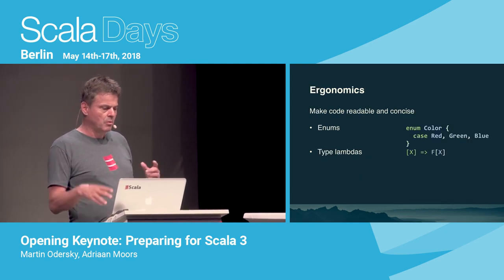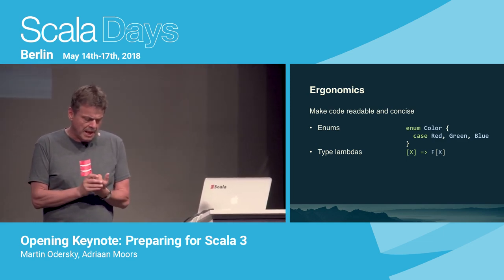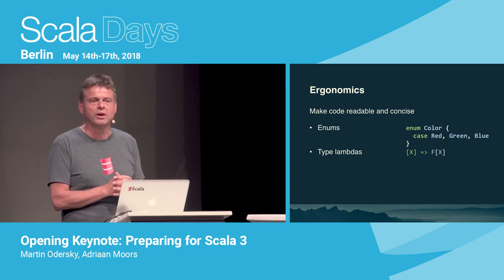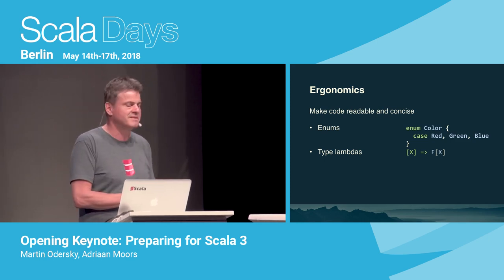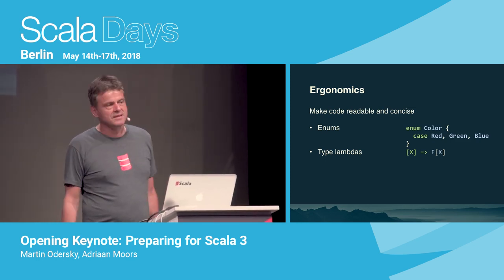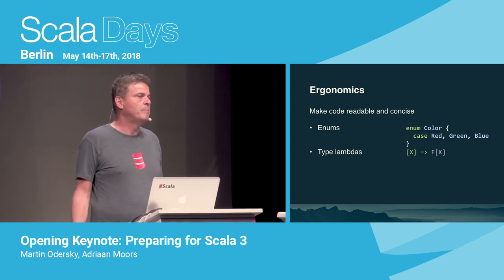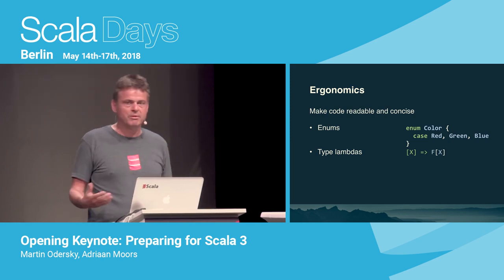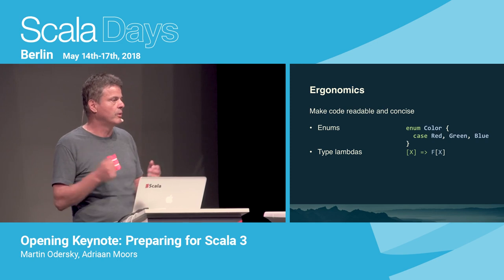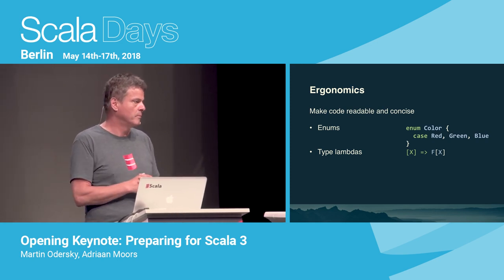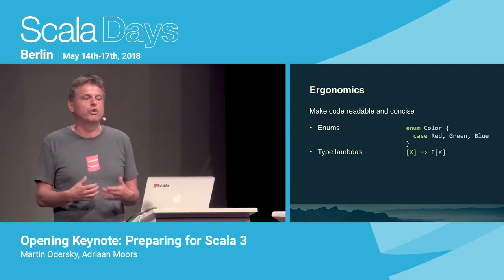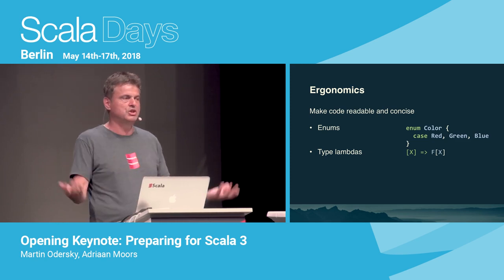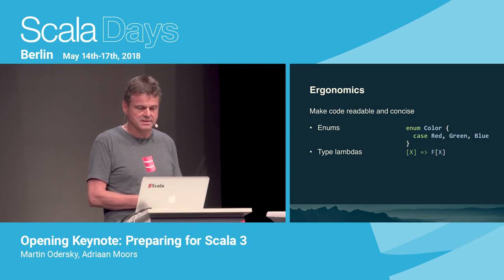For ergonomics — reducing boilerplate — Scala came and reduced boilerplate from Java programs with case classes, no getters, no setters, no equality methods. But over the years, we've developed patterns in Scala programs that are actually quite boilerplate-y themselves. We use case classes for data types left and right, everywhere — it's a lot more clunky than if you had an enum. Now we have it: you can write 'enum Color { case Red, Green, Blue }' — and that generalizes to things like lists and options and general case classes with parameters.